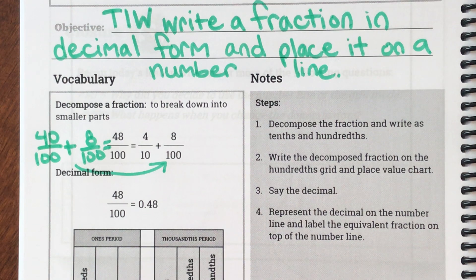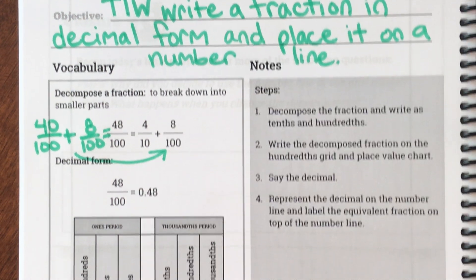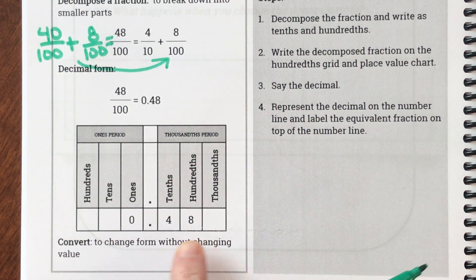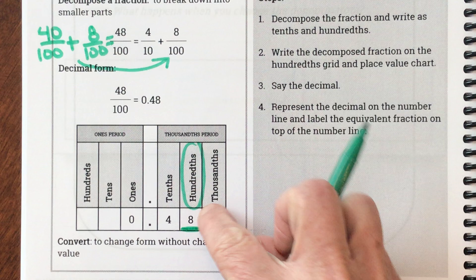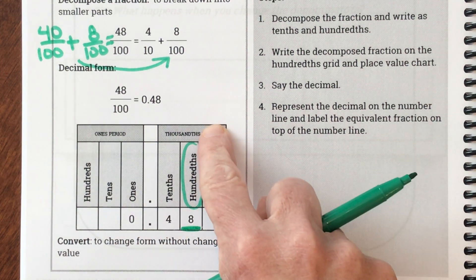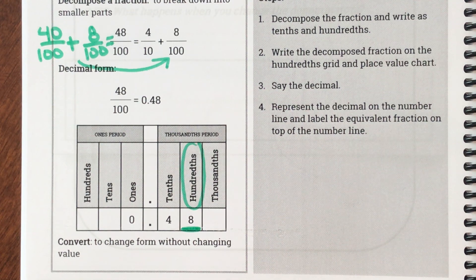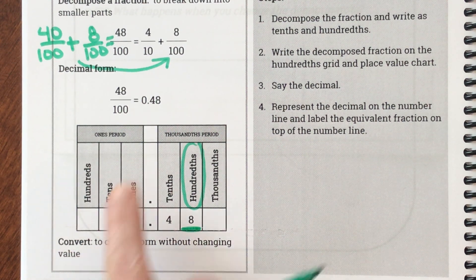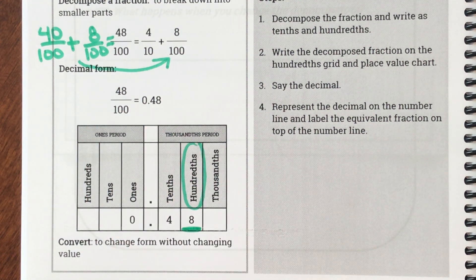This is decimal form. If I read this fraction I'd say forty-eight hundredths. This decimal is also read as forty-eight hundredths because if we look at it in the place value chart, I see 48, and you always say the last place value — since eight is in the hundredths place, we read it as forty-eight hundredths. Convert means to change form without changing value. They converted this fraction into a decimal — they changed how it looked but not how much it was worth.